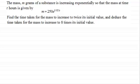Hi, now in this example we've got the mass m grams of a substance is increasing exponentially so that the mass at time t hours is given by m equals 250 multiplied by e to the power 0.021t. We've got to find the time taken for the mass to increase to twice its initial value